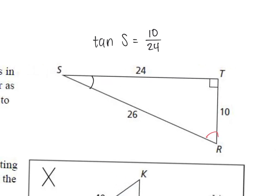If you plug that into your calculator, what do we get? Remember, it said four decimal places. So 10 divided by 24 gives us 0.4167. On our quiz or test we would round it to 0.4167.